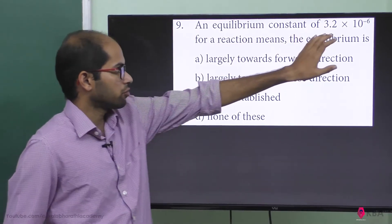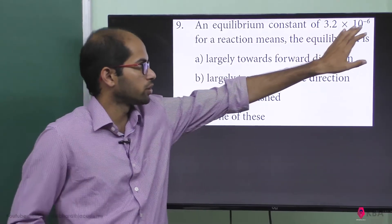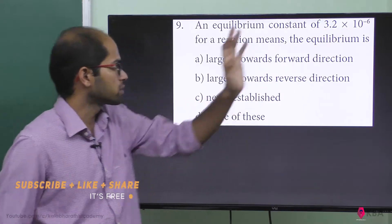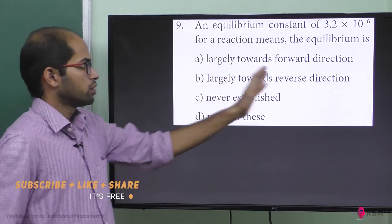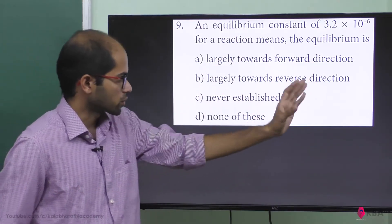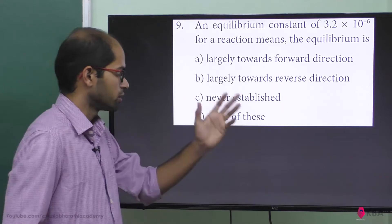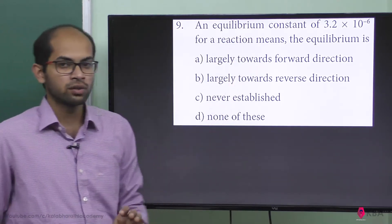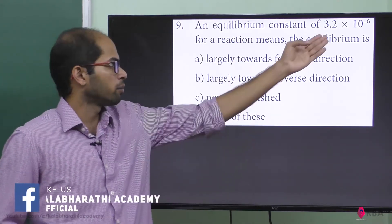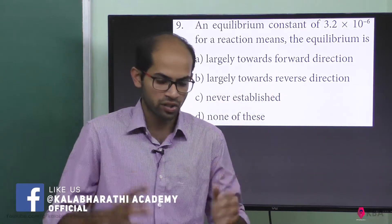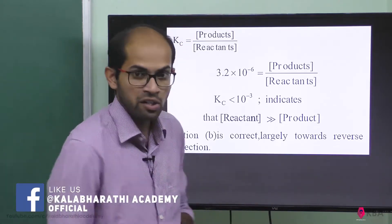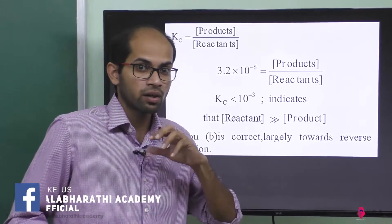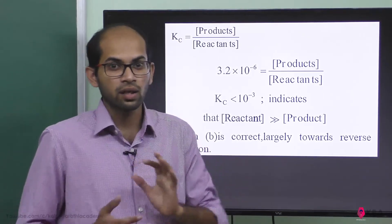An equilibrium constant of 3.2 × 10 to the power minus 6 for a reaction means the equilibrium is largely towards forward direction, largely towards reverse direction, never established, or none of these? In this reaction, it is largely towards which direction — forward or reverse?